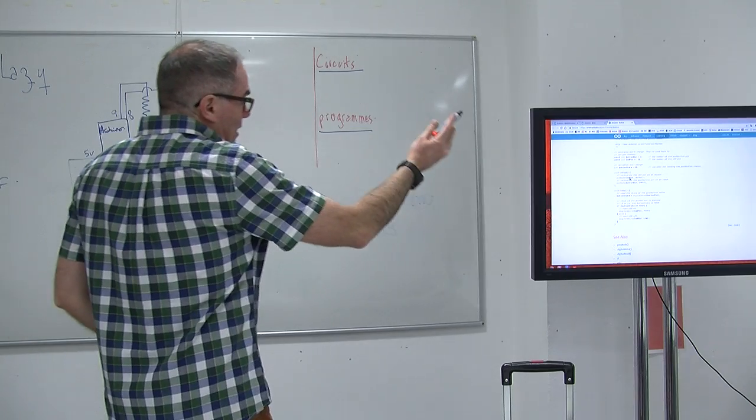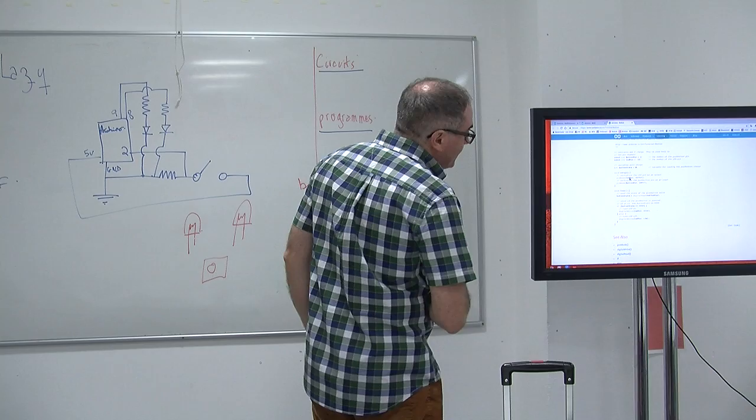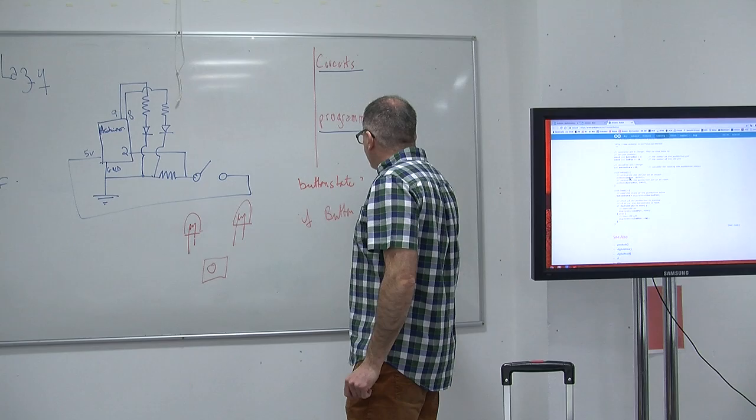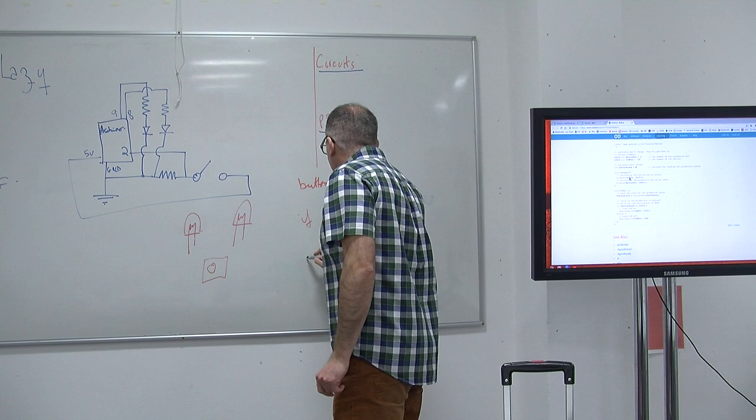The button program. We know that we read the button state. Then we have this. If button pressed, we have pin 13 on, and else pin 13 off.